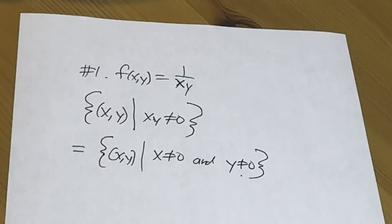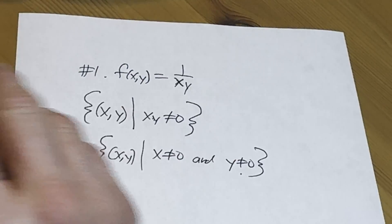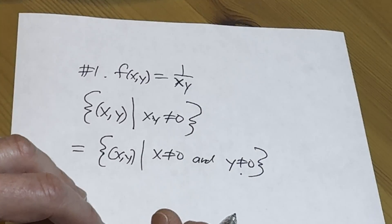This is true for real numbers, right? It's not true for like matrices. In any case, that would be the domain for this one. Let's do number three.